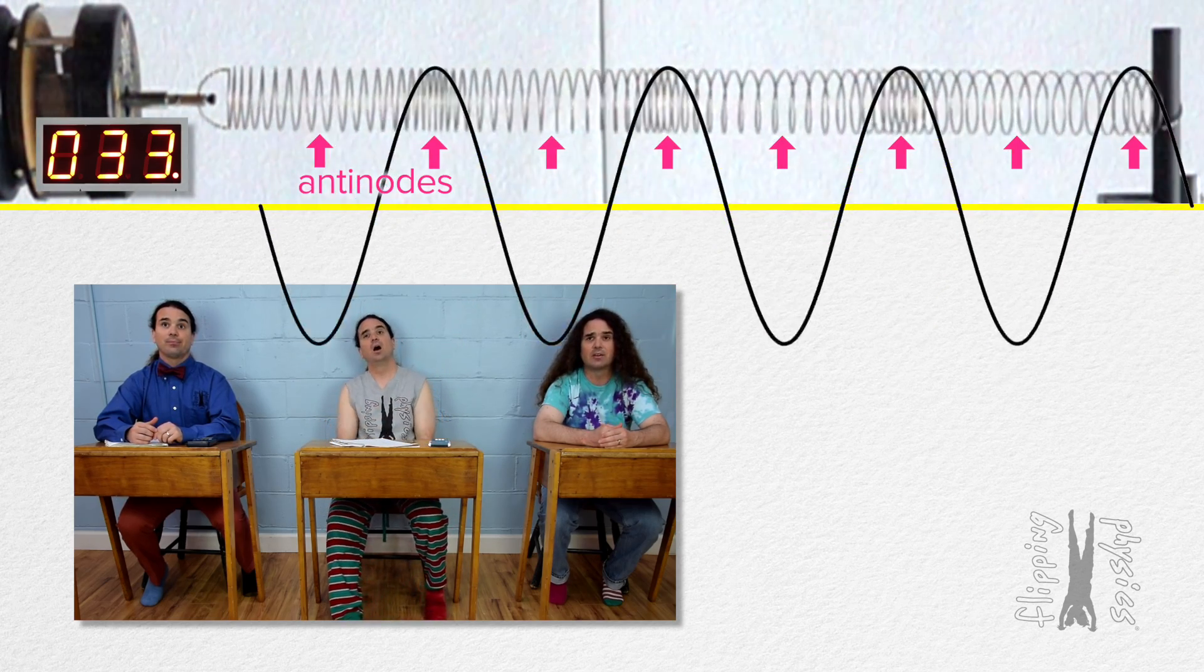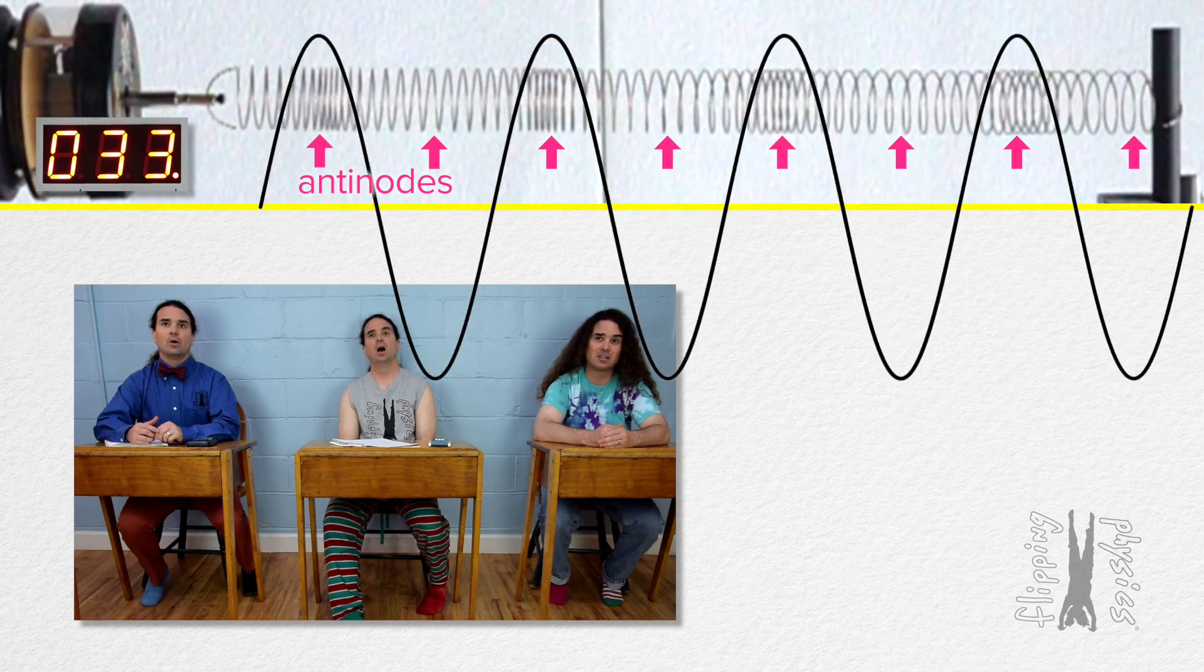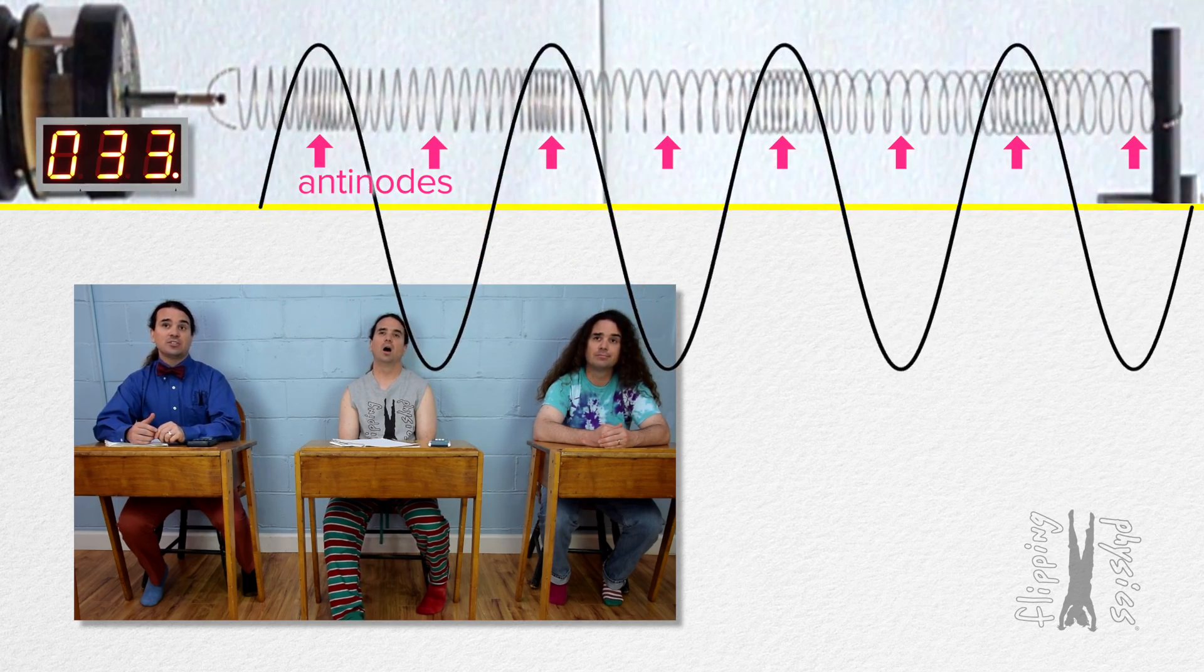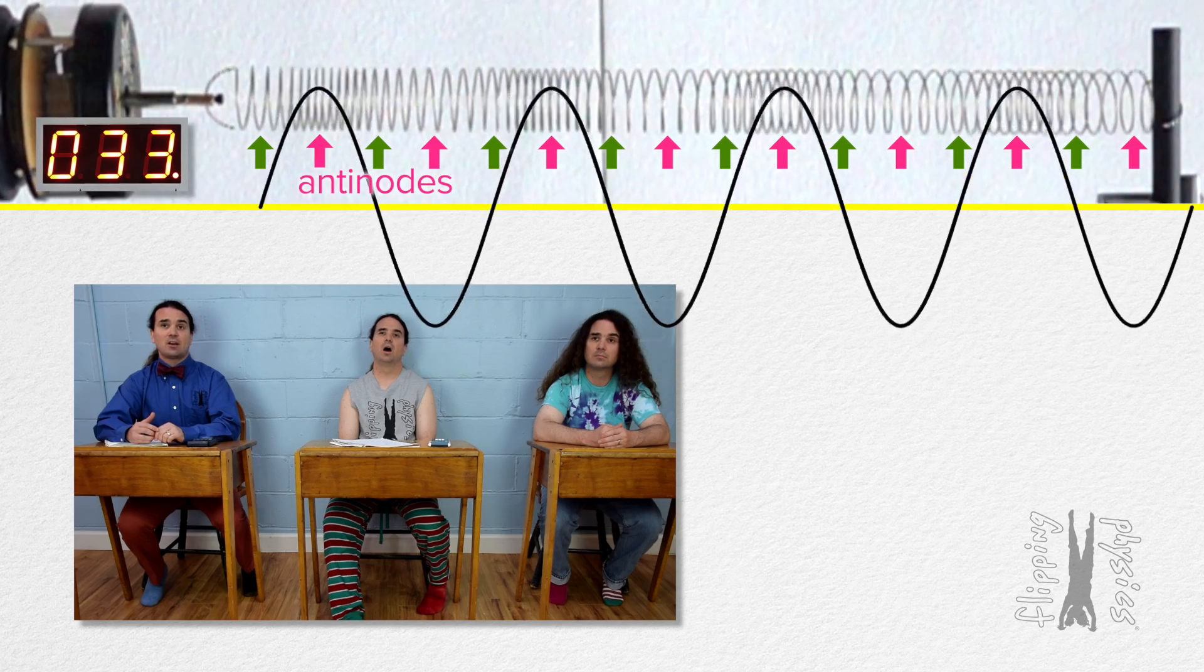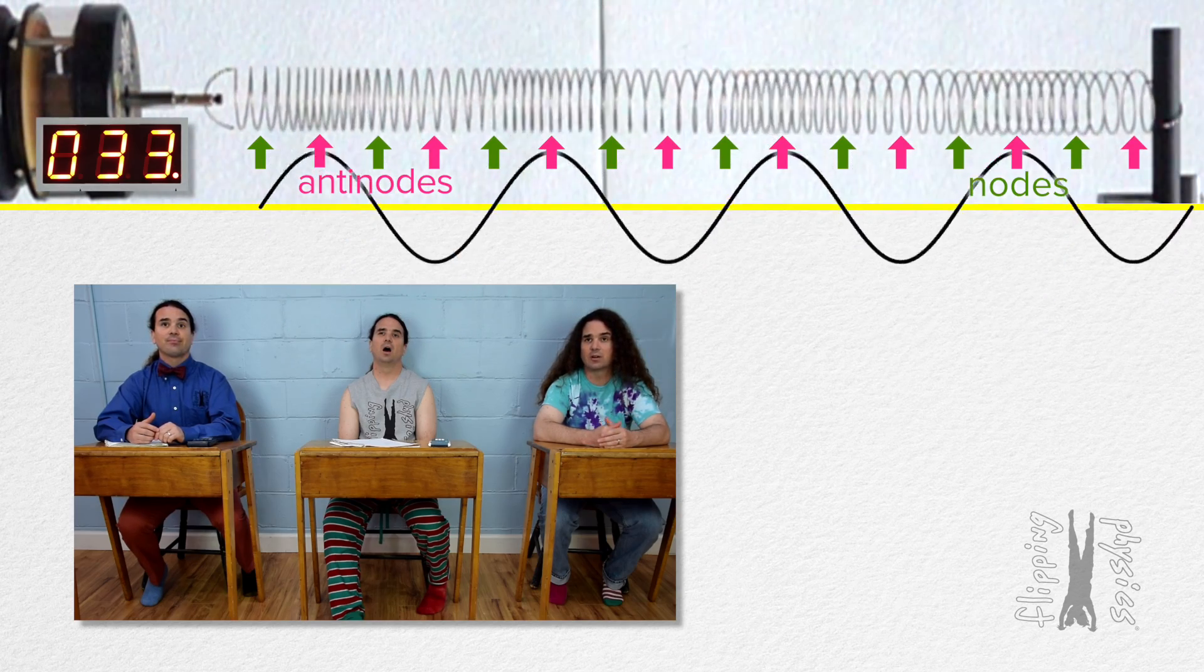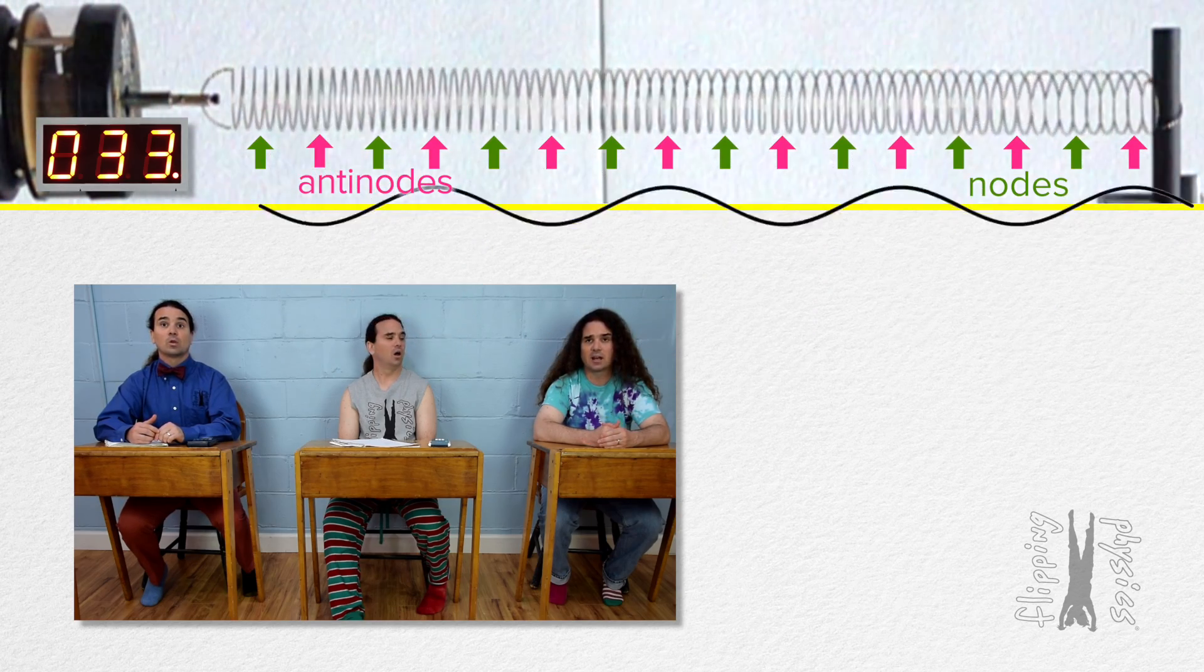Those are the antinodes, where the waves interfere to cause the largest amplitude. Oh right, and the locations of total destructive interference are the nodes. That means the nodes are where the density of the spring stays constant the whole time.